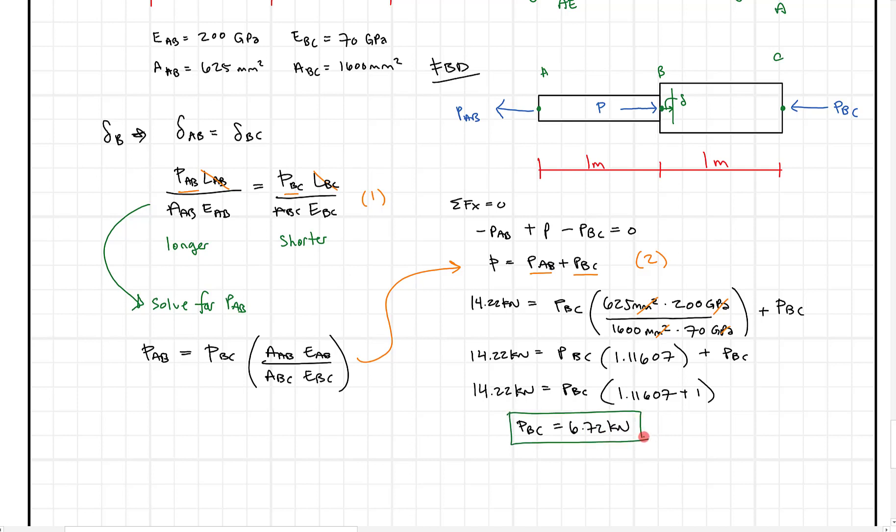So that's good. We've got our first value. So what we're going to do is we're going to just plug in that equation. We have 14.22 kilonewtons has to equal PAB plus 6.72 kilonewtons. And when we subtract 6.72 kilonewtons from both sides, what we're going to get here is we're going to get PAB has to equal 7.5 kilonewtons. So that's pretty good. We have another answer here.